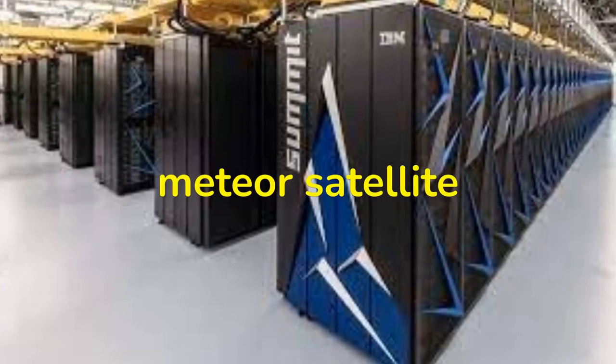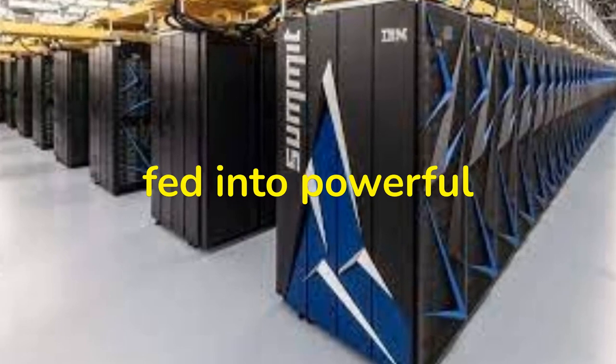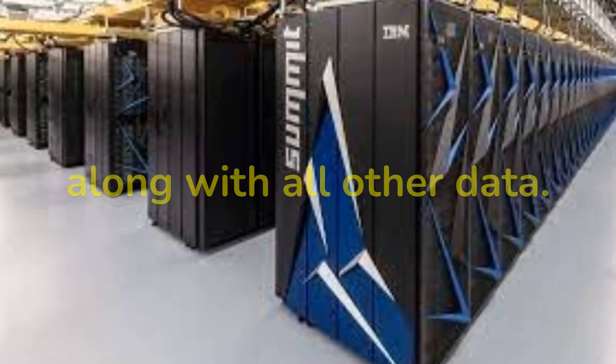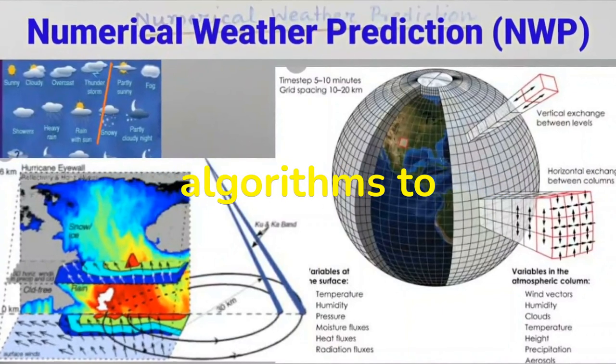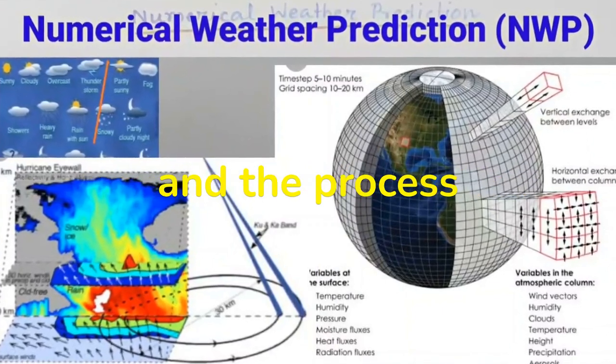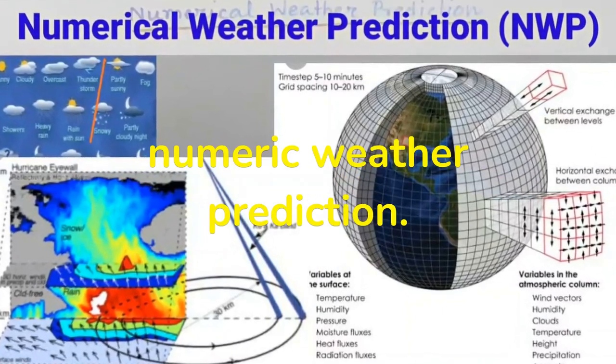Consequently, meteor satellite observations are fed into powerful supercomputers along with all other data. These huge machines use these data mining techniques and algorithms to forecast future weather, and the process is called numeric weather prediction.